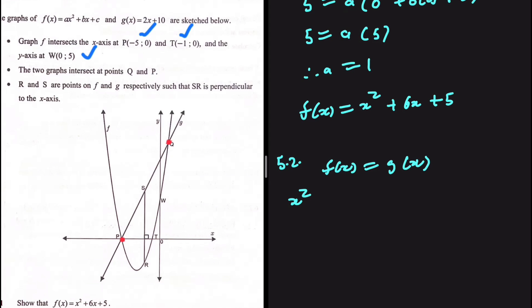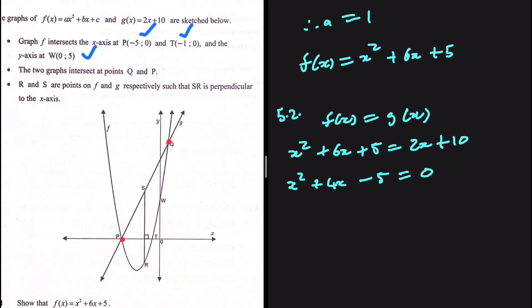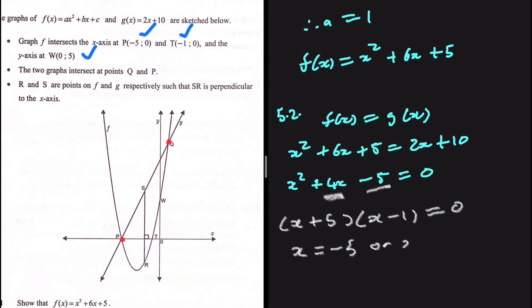Setting f of x equal to g of x: x squared plus 6x plus 5 equals 2x plus 10. Taking 2x and 10 to the left-hand side gives x squared plus 4x minus 5 equals 0. Factorizing: which two numbers multiply to minus 5 and add to 4? That is 5 and minus 1. So we get x plus 5, multiplied by x minus 1, equals 0.